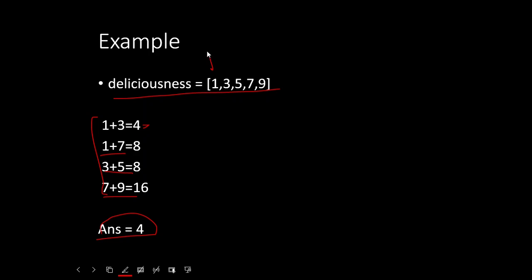The brute force approach is to loop for every element and then check for that particular element whether the sum equals a power of 2. For example, for 1 we will check 3, 5, 7, and 9. Then again we will check 7 and 9. That's how we run the loop and find the pairs.